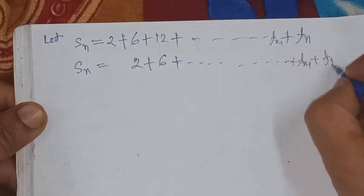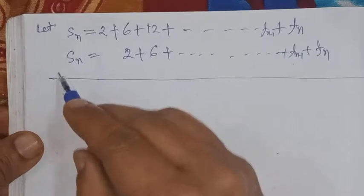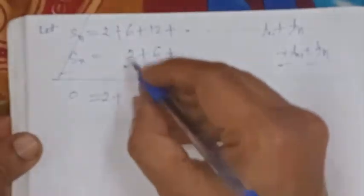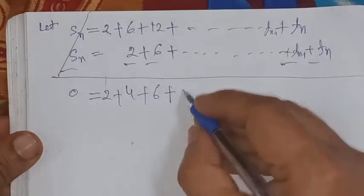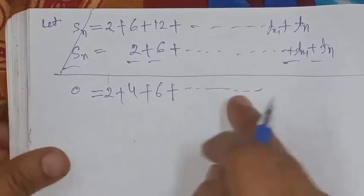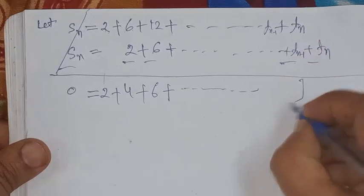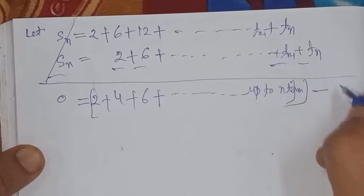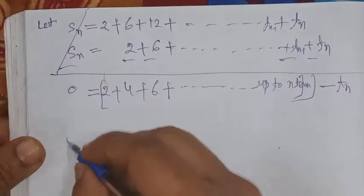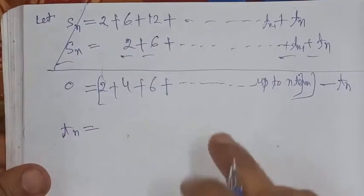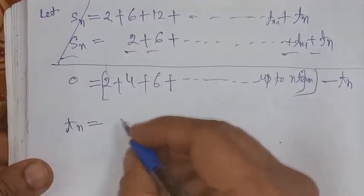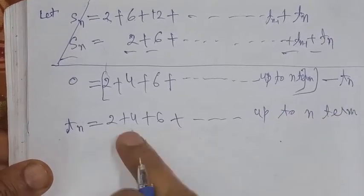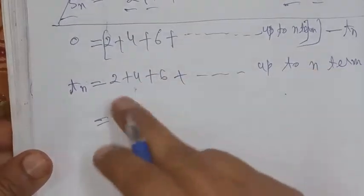When we subtract consecutive terms they cancel, and we are left with a telescoping sum. After cancellation, the remaining series on the right-hand side is 2 + 4 + 6 + ... up to n terms, which is an arithmetic progression (AP). Similarly, the inner sequence 6, 12, 20... needs its nth term.